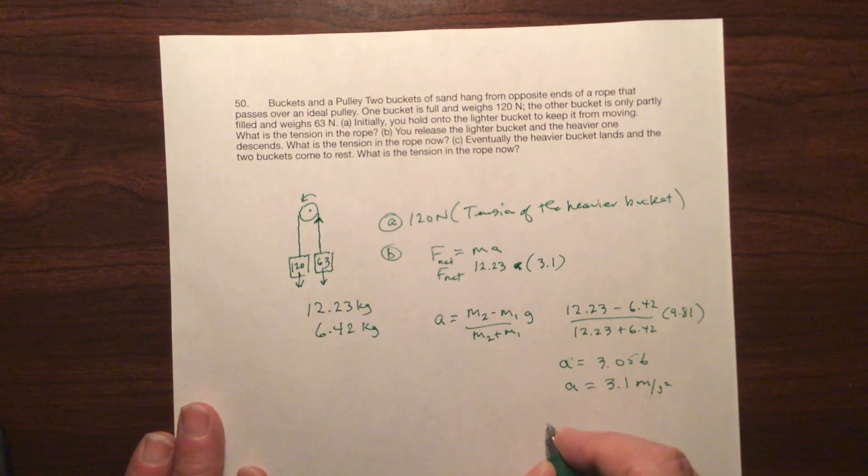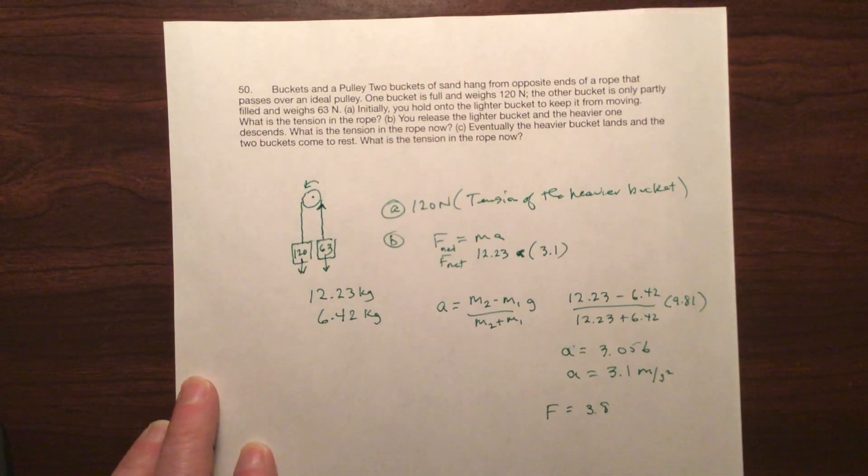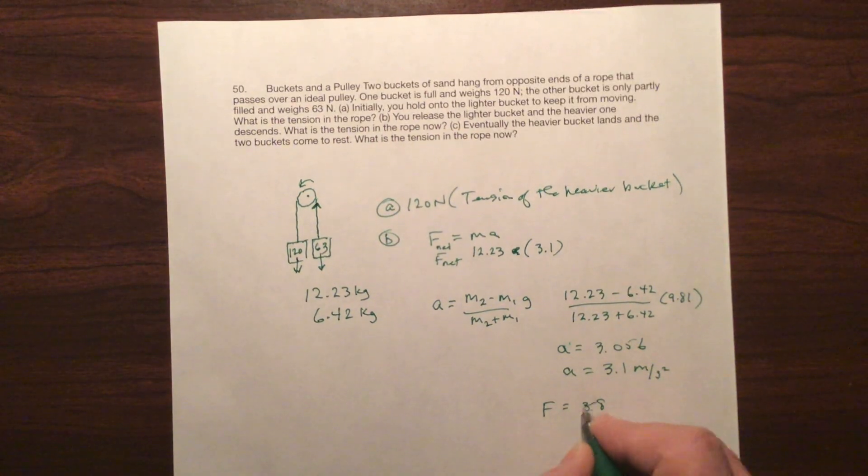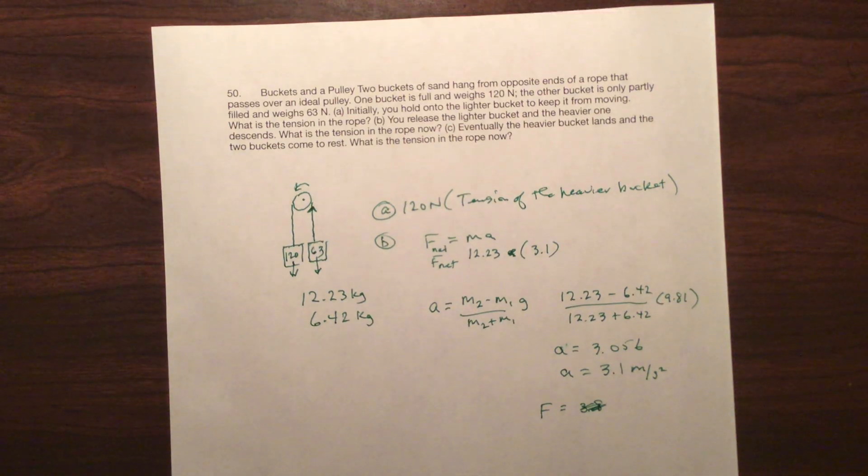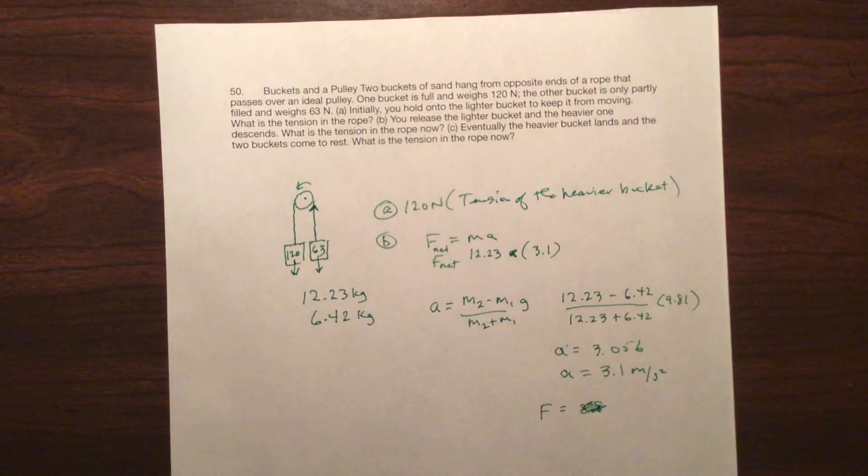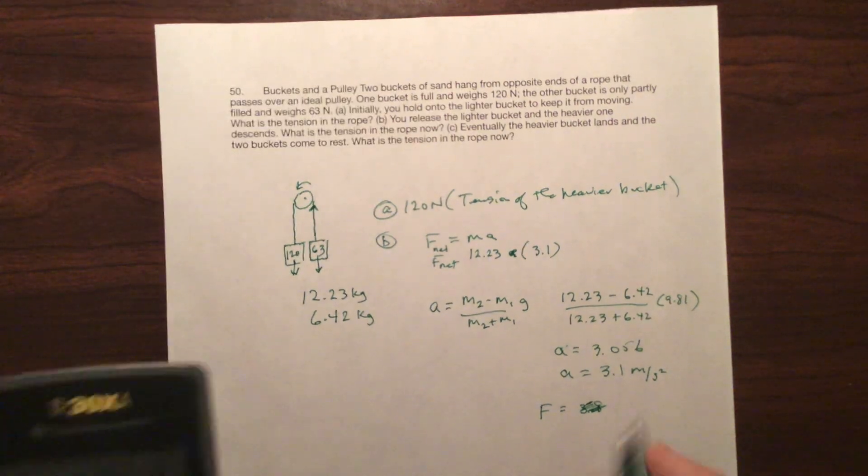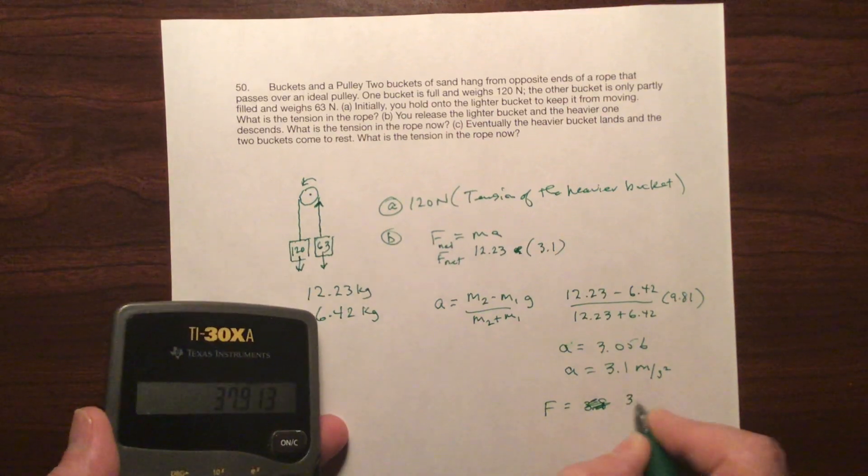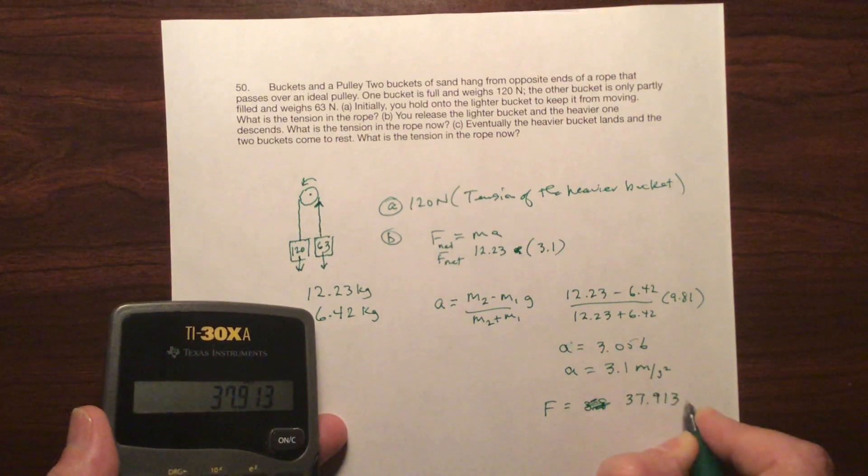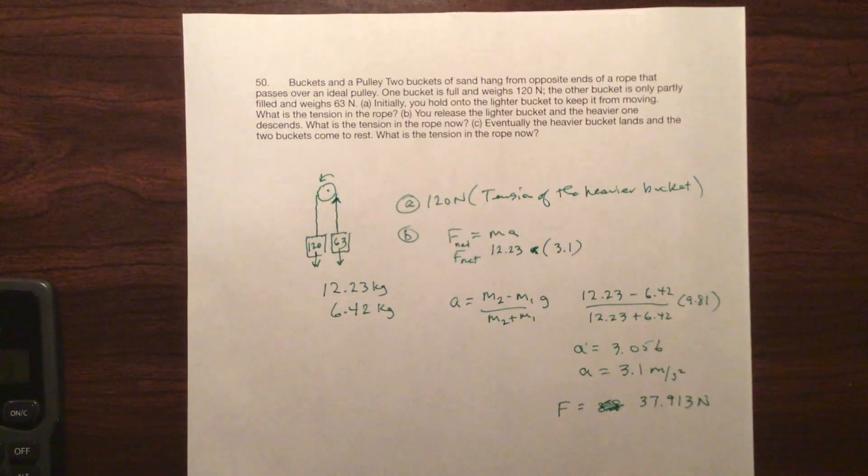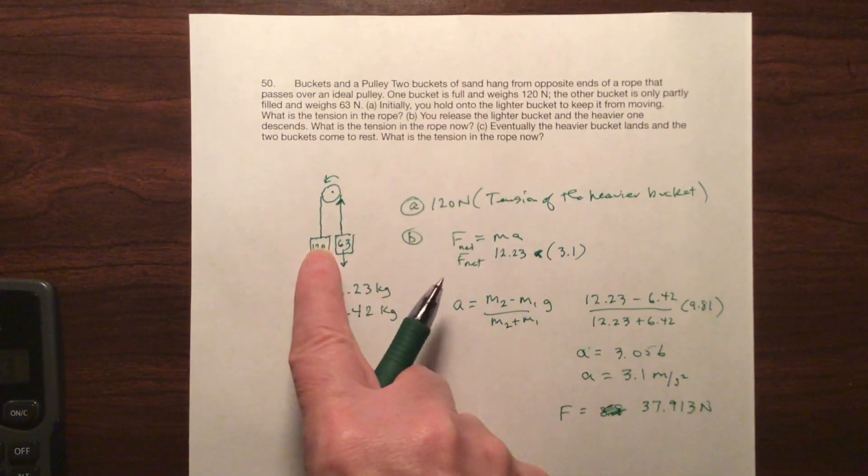So I get the force as, let me do it again. 12.23 times 3.1. It's 37.913 Newtons. Alright. So this force is the force that's actually making this drop.